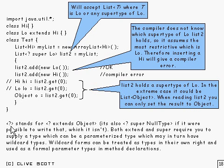Now, a couple of other things. A question mark, just by itself, stands for something which extends object. And that is also the same thing, by the way, if it was able to write it as something which is super null type. As I say, if it were possible to write that, which it isn't. But that's sometimes worth bearing in mind when you're doing manipulation of these things.